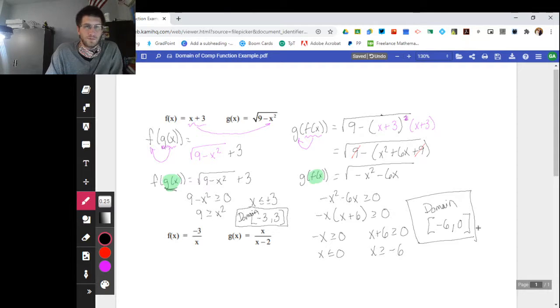So whenever you're dealing with roots and composite functions, make sure the inside of your root is greater than or equal to zero. Other areas that we can run into, like this one down here, which we'll do in the next video. Whenever we have fractions, we have to make sure that the denominator is not zero to make sure we don't get the undefined value. So thanks for watching. Make sure you like, subscribe, and check out the next video. Thank you.